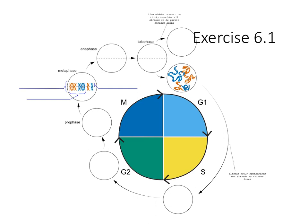Moving forward from DNA replication and chromosome structure into mitosis and meiosis — this was one of the exercises I asked everyone to try for today, just diagramming what the chromosomes look like at different stages of the cell cycle. Quick reminder: there are four parts to the cell cycle — the first growth stage G1, synthesis where all chromosomes replicate, the second growth phase G2, and then the M phase for mitosis. G1, S, and G2 together are called interphase.